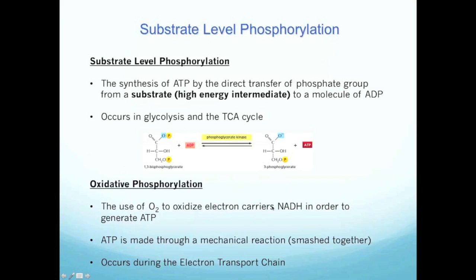Let's go back and review. Both substrate level and oxidative phosphorylation involve the synthesis of ATP. Substrate level phosphorylation is the synthesis of ATP by the transfer of a phosphate group from a molecule or substrate — some kind of reactant — to a molecule of ADP to form ATP. Oxidative phosphorylation is the use of oxygen to oxidize electron carriers in order to generate a force that will push together ADP and inorganic phosphate to form ATP.